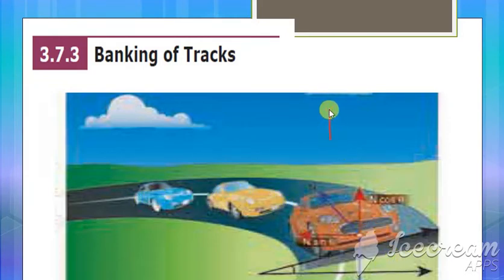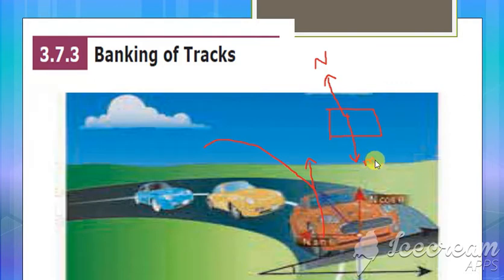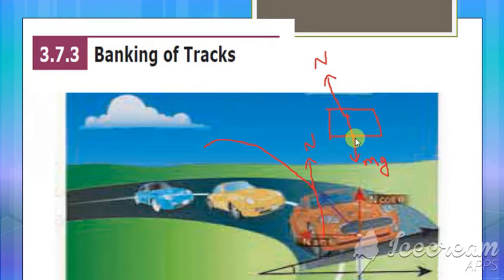Whenever any particle is moving, we know that it has a normal force. Here it is given by the normal force in this direction because this particle is completely moving in the circular path. When it is moving, this is the upward force — the normal force given by mg — and downward we have the gravitational force which is mg. Upward, the normal force N. And now there is a frictional force; that frictional force gives you a centripetal force, acting along this direction.